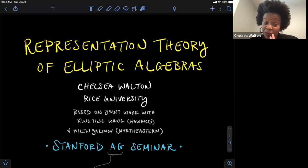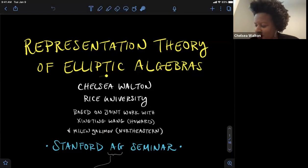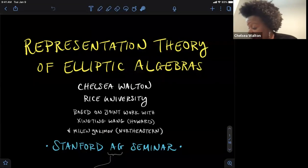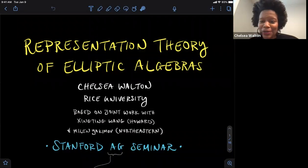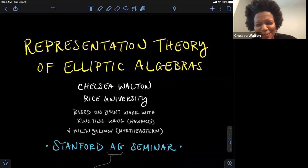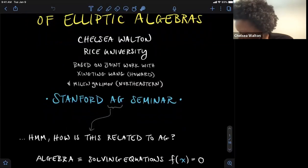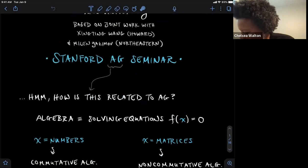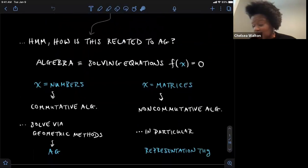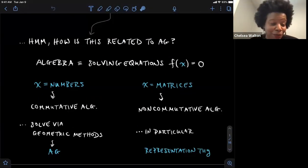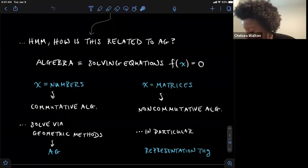If you have any questions along the way, really do feel free to interrupt. I hope to keep this really down to earth. So today I'm going to talk about representation theory of elliptic algebras. This is joint work with my collaborators Xin Ting-Wang and Yakimov. You might be wondering: she does non-commutative algebra rep theory—what does this have to do with AG? Well, broadly speaking, I think of algebra as a way of solving equations. If you want to solve equations with numbers, you get a commutative algebra. If you're interested in solving equations with geometric methods, you get AG.